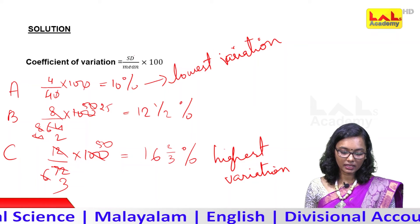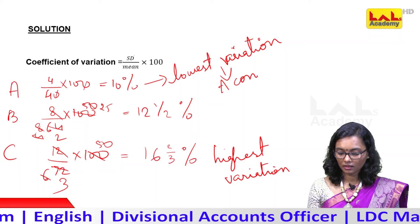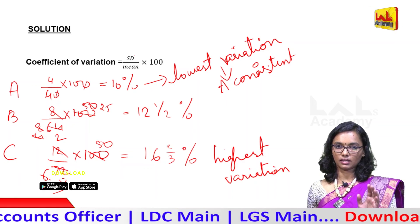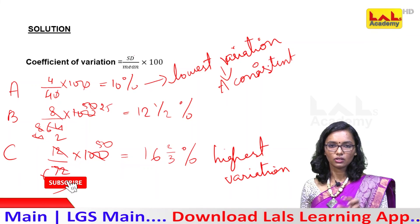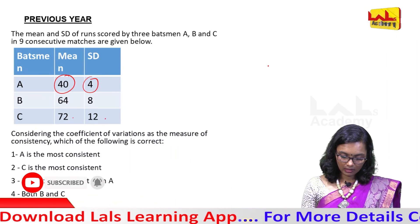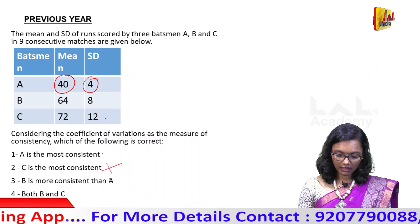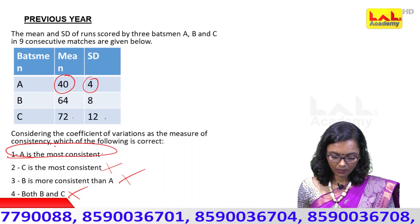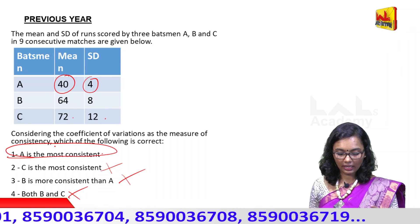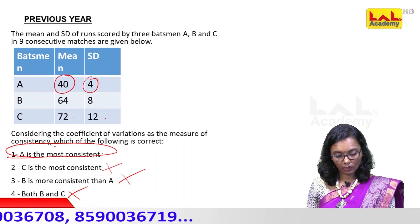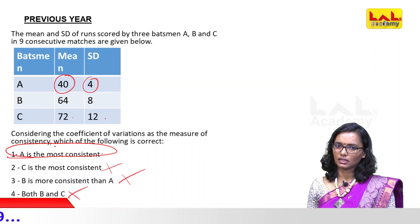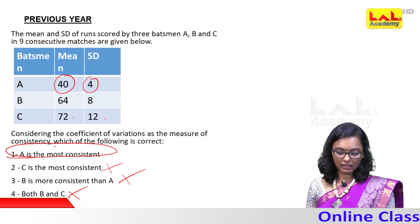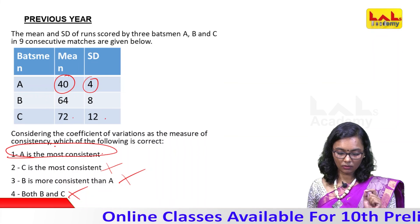A has maximum variation. A is the most consistent — C is not the most consistent, B is not the most consistent. A is the most consistent because A has the lowest Coefficient of Variation at 10%. So option 1 is the answer. C is not the most consistent — A is the most consistent, with the lowest variation percentage.